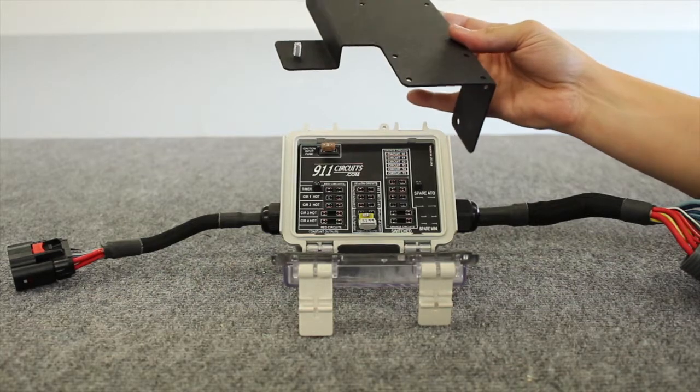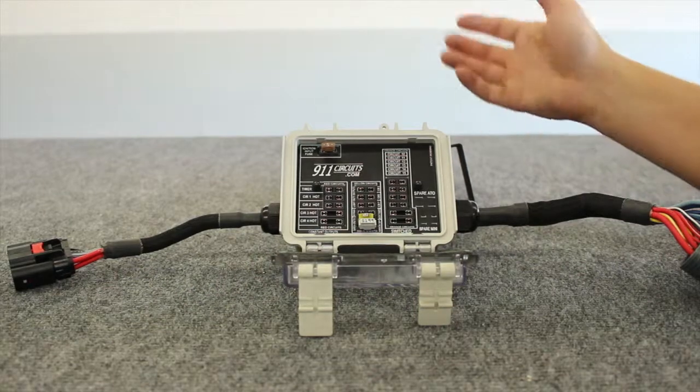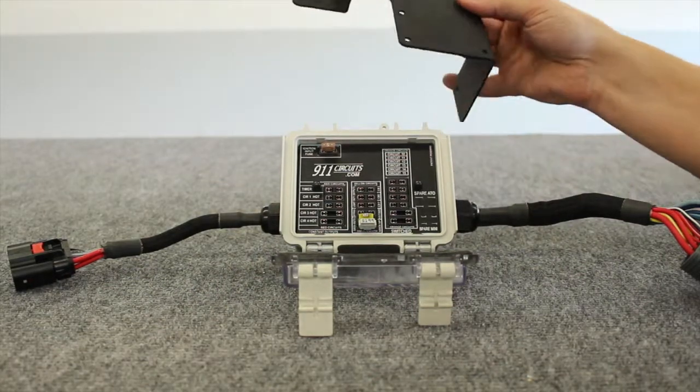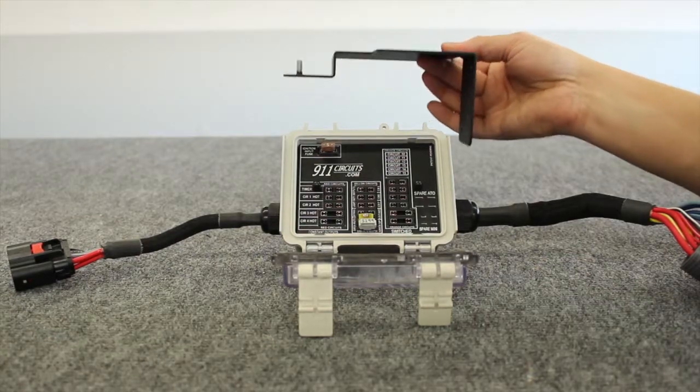So in that case, we would get this bracket. And by the way, all of our systems are vehicle universal, so Ford, Chevy, Dodge, boat, doesn't matter. What makes it vehicle and location specific is actually the mount. So let's mount this up for a Chevy Tahoe.